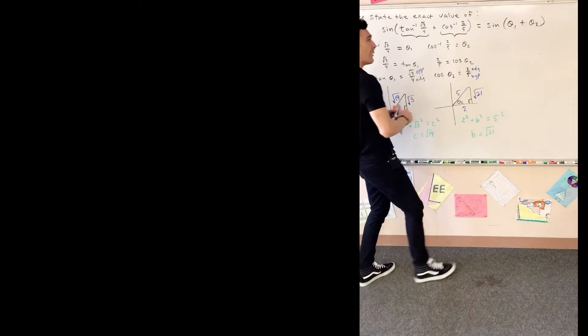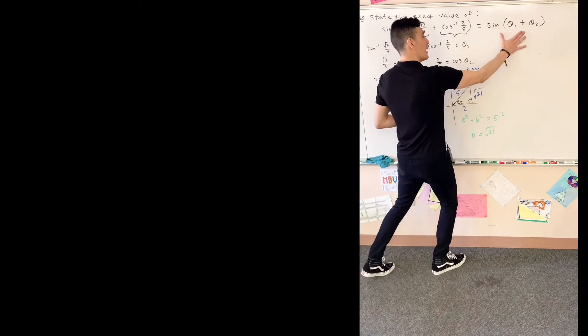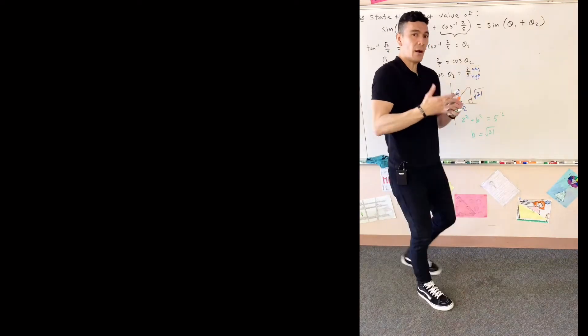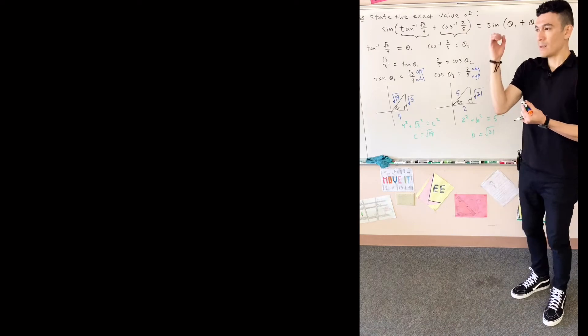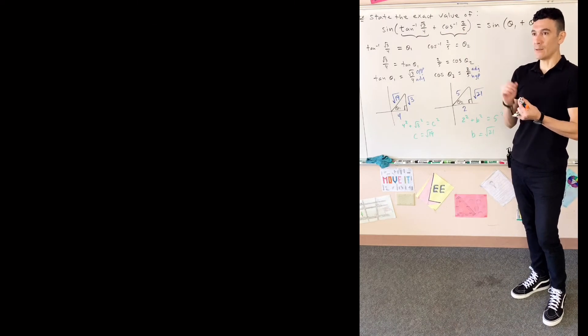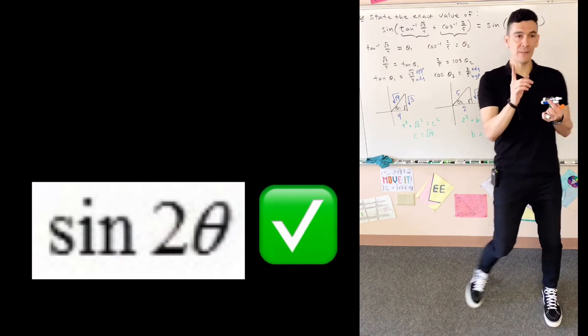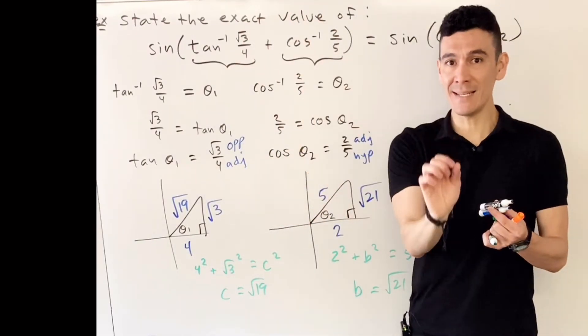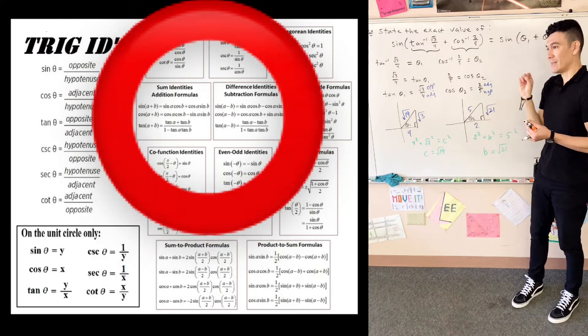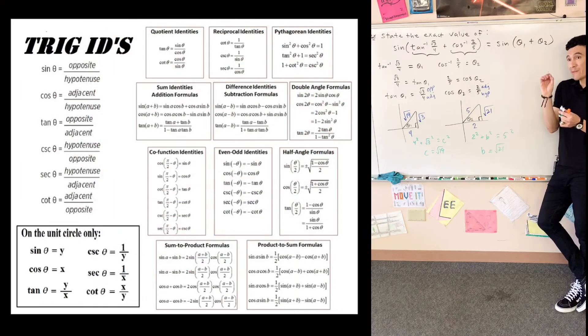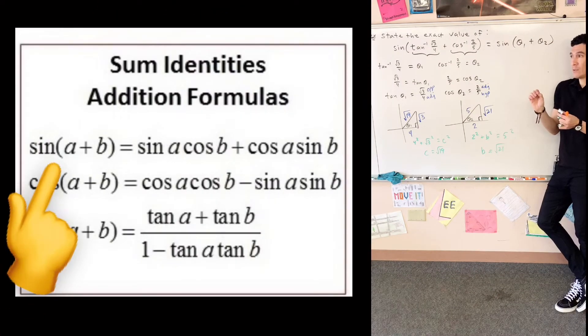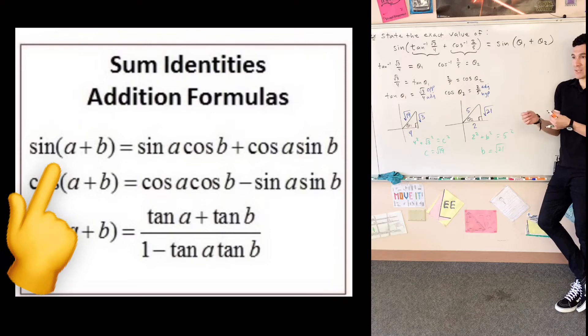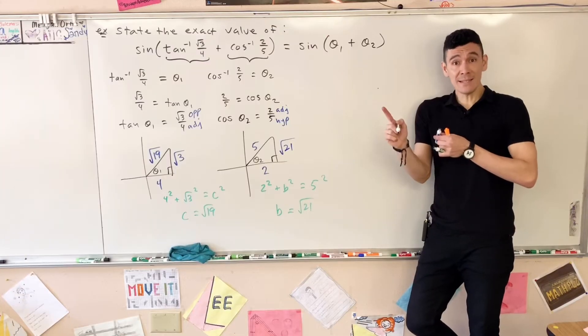So now I'm currently right here, but what in the world do I do with this? Because I have seen sine of theta, we have seen sine of two theta, but I have never seen sine of something plus something. So for that, let's go to our trig identities cheat sheet. We're looking at this formula right here which says sine of a plus b equals sine a cosine b plus cosine a sine b.